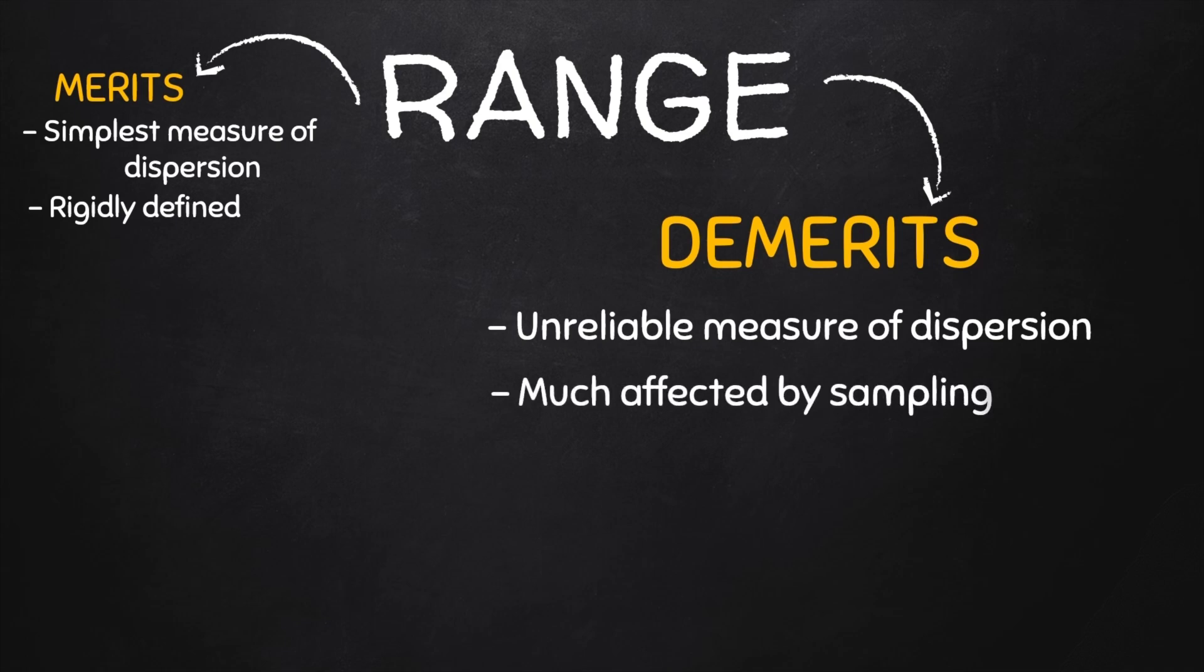Next, the range is very much affected by fluctuations in sampling. Its value varies widely from sample to sample, and this is bad for any kind of statistic because statistics depends on the sample. So if you take different samples from the population and measure range, you will find very wide differences in the range.